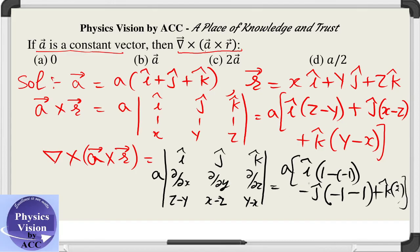So finally we got 2 a i cap plus 2 a j cap plus 2 a k cap, which is 2 a vector, 2 a. That is option c is correct for this. So thanks for watching.